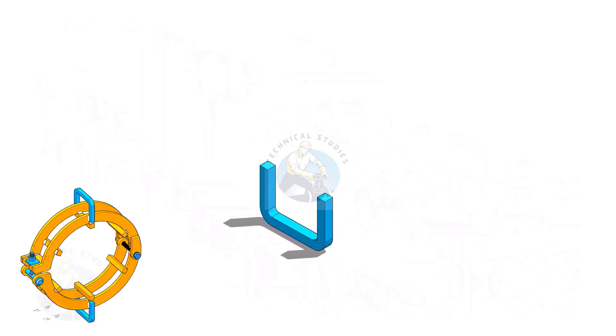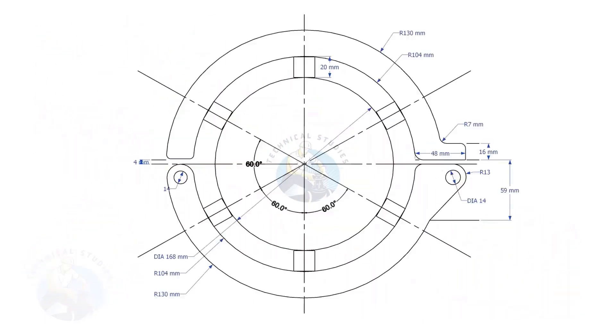Let us make the different parts of the pipe clamp. This is the main part of the clamp. I will explain to you how to layout this.